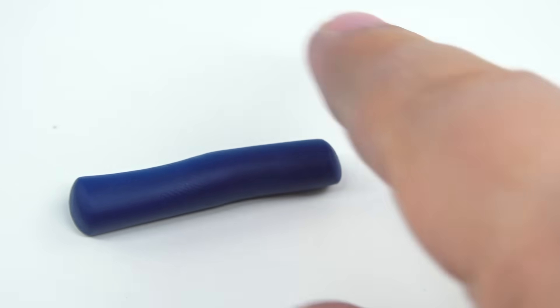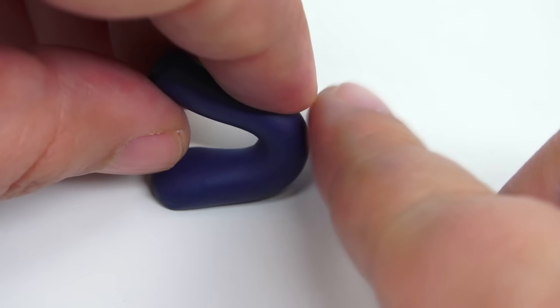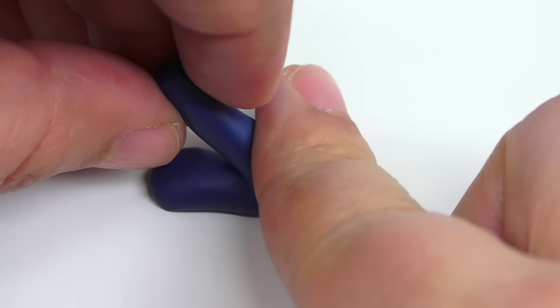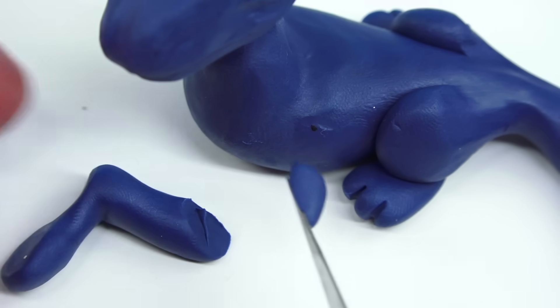For the front paws, we're going to make an udon shape, which is just pretty much a noodle, and then lightly flatten the front part, which is going to be the paws. Place it in the front, and again, take your toothpick, and make the little beans, the little toesies.